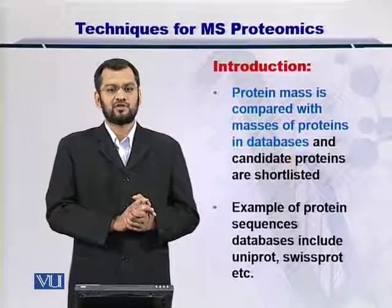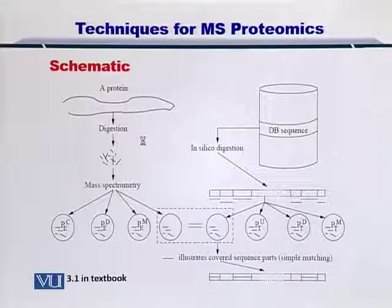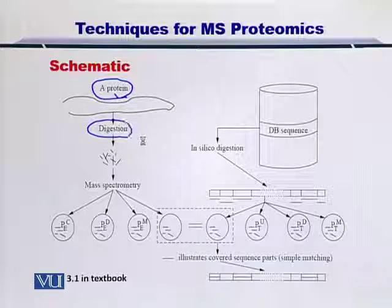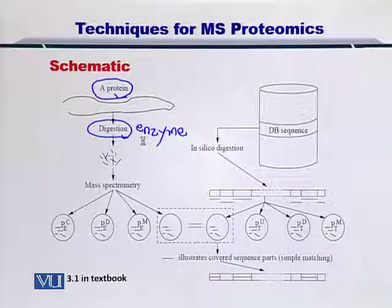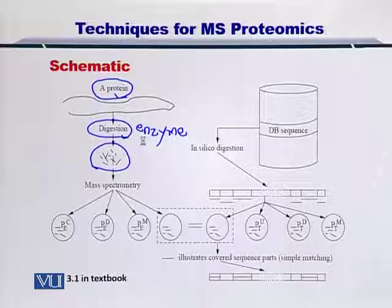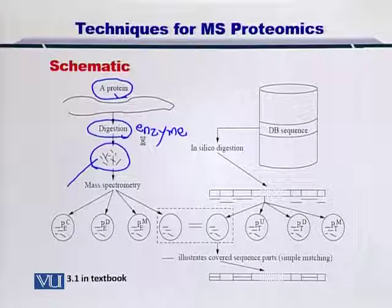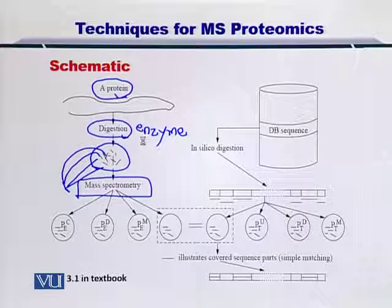Let's take a look at the schema for this process. In this schematic diagram, we have a protein that we can digest using an enzyme. For instance, if you use trypsin, then the protein will be digested at all lysine residues. Once you have digested the protein, you will arrive at several peptides depending on how many sites were cleaved within the precursor protein. Each of these fragments is then measured by the mass spectrometer, giving you the mass for each peptide.